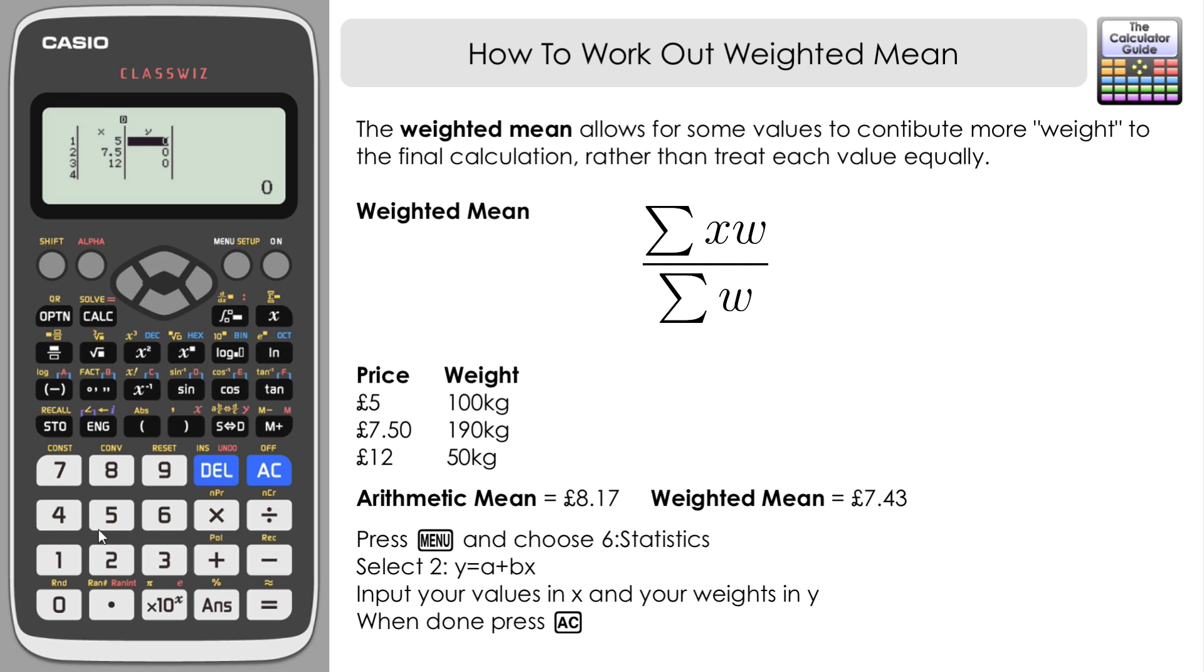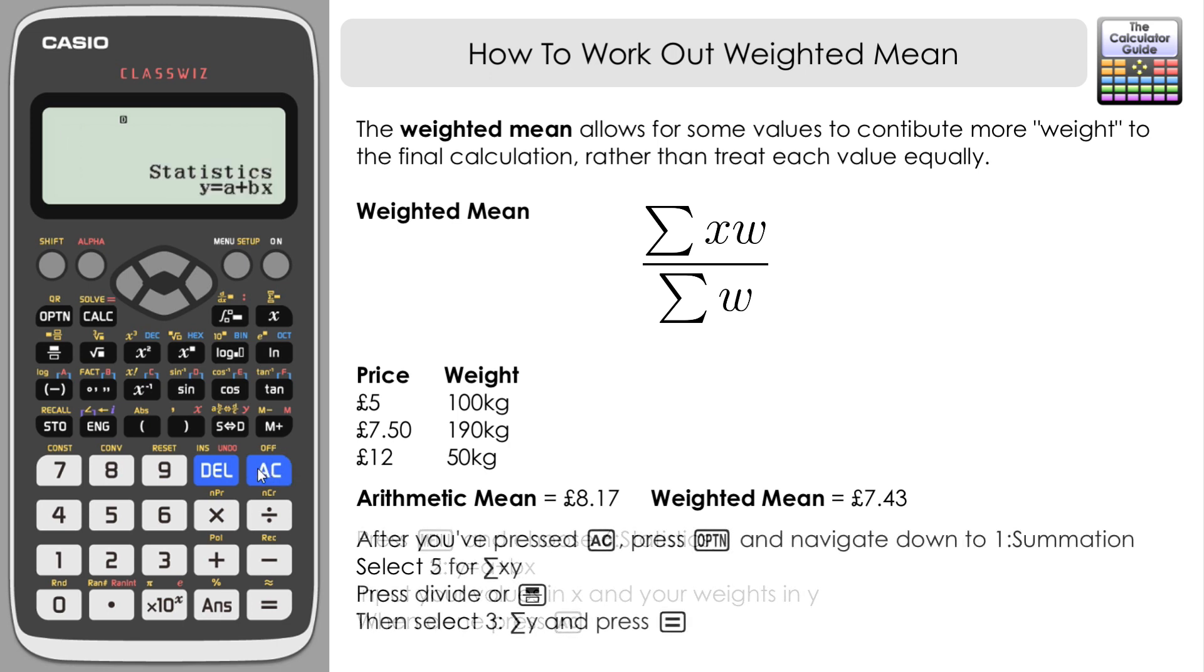Input your prices into the x column and then into the y column, just navigate to the first one, we're going to input the weights of the different products and press equals. Then when we have the statistics y equals a plus bx shown, we press option and you need to just scroll down here. If you scroll down to the second page we can see we've got one summation. If we choose that, then we want to choose, if we think about the formula, the sum of xw. Remember we've substituted w for y so we want the sum of xy which is 5 from our menu.